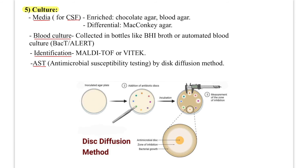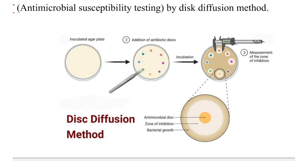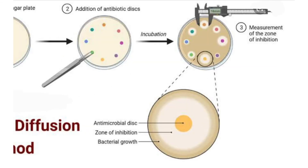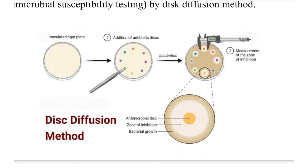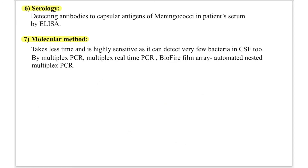Antimicrobial susceptibility testing is done by the disc diffusion method. An agar plate full of bacterial colonies is prepared, then different antibiotic discs are added. After incubation, the zone of inhibition is checked. If the bacteria are susceptible to a particular antibiotic, the antibiotic prevents bacterial growth in that region — this area is the zone of inhibition. This tells us whether the antibiotic can be used for treatment.